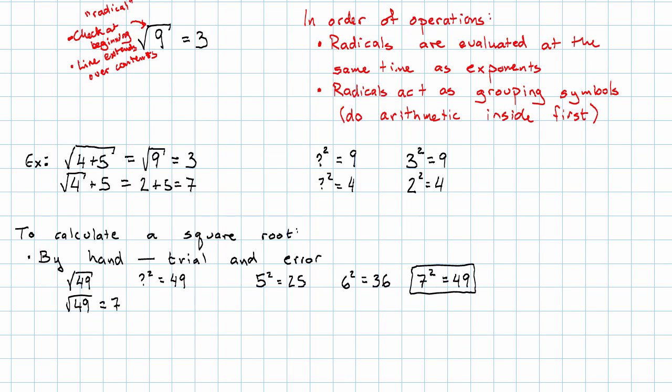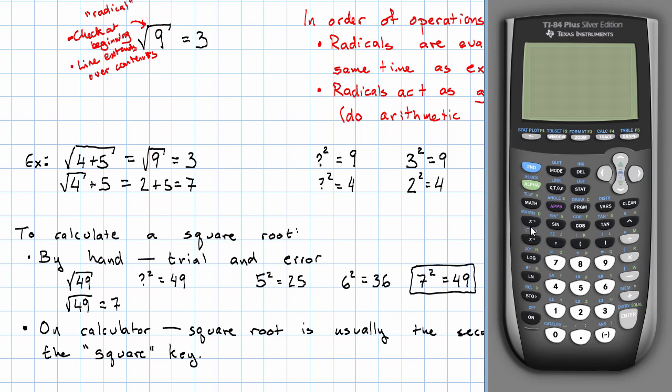On a calculator, the square root is usually the second function of the square key on most scientific or graphing calculators. On the TI-84, if we look carefully, we can see the little blue radical above the square key. If we hit second and then the square key, on this calculator, we get a radical followed by a parenthesis.